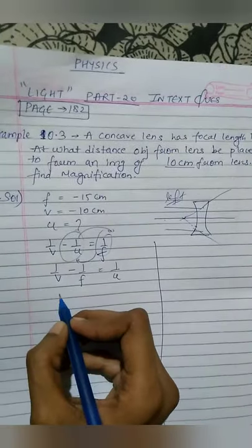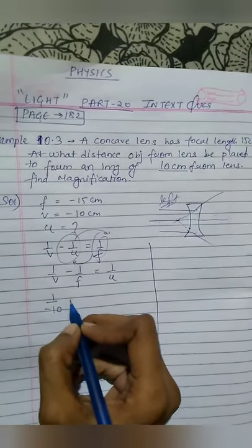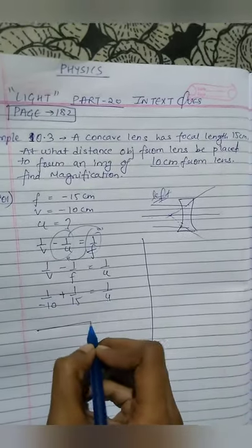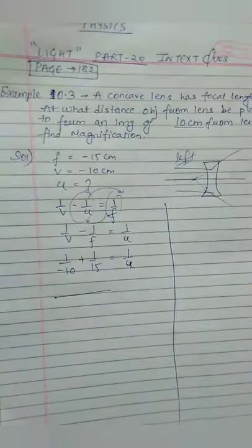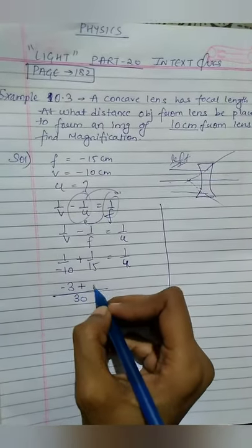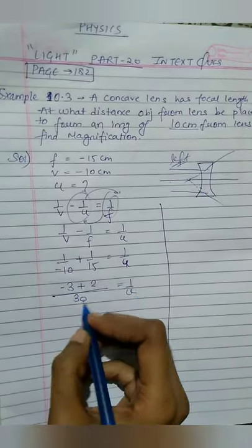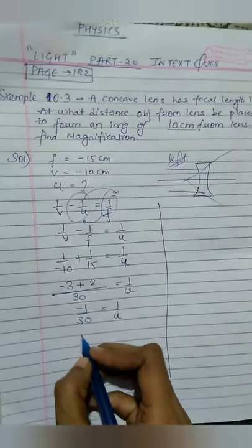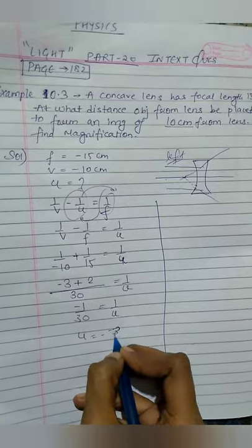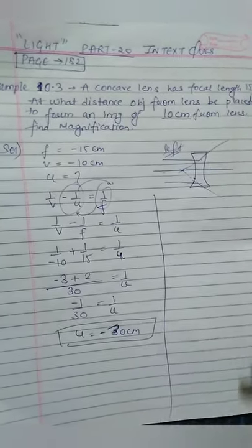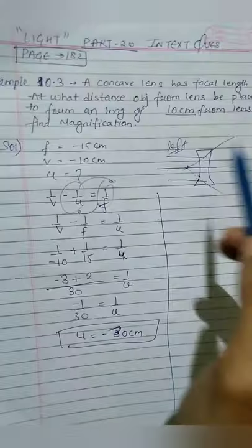Let's solve it. 1 by minus 10 plus 1 by 15 equals 1 by u. Taking LCM 30: minus 3 plus 2 equals 1 by u. So minus 1 by 30 equals 1 by u. Therefore, u equals minus 30 centimeter. It's always minus because the object is on the left side.